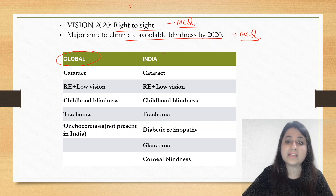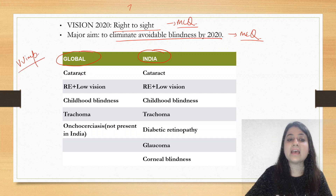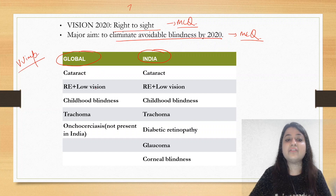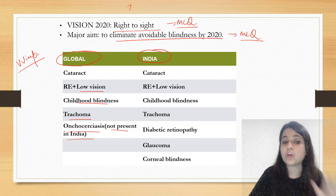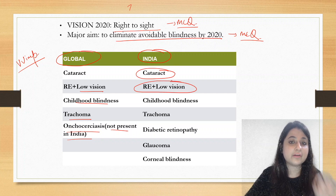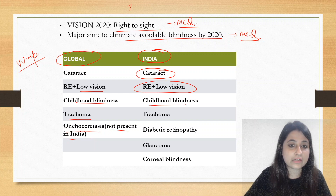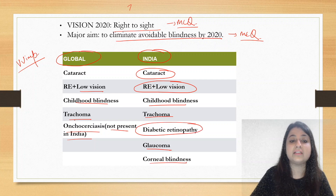You are also asked about the diseases covered under global Vision 2020 and India Vision 2020 — this slide is very important. Globally, the diseases are: cataract, refractive errors and low vision, childhood blindness, trachoma, and onchocerciasis. For India, we have: cataract, refractive error plus low vision, childhood blindness, trachoma, diabetic retinopathy, glaucoma, and corneal diseases.